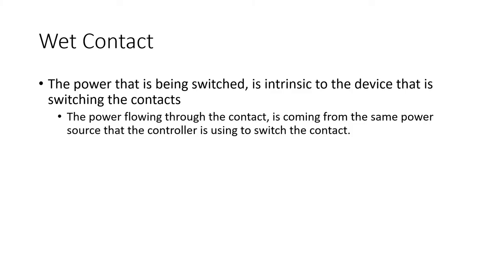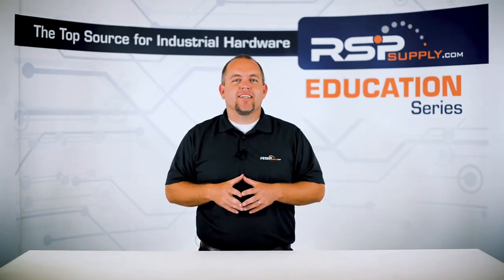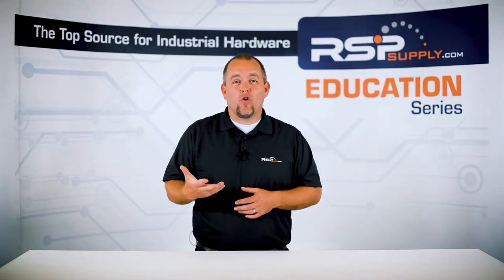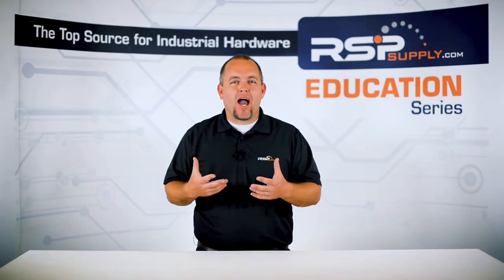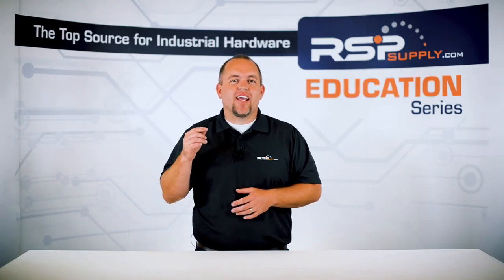Now let's talk about a wet contact. Wet contacts are different in one main area: the power that is being switched is intrinsic to the device that is switching the contacts. In other words, the power flowing through the contacts is coming from the same power source that the controller is using to switch the contact. For example, a common device we are all familiar with is a furnace in our homes. This furnace is most likely being supplied 120 volts or 240 volts AC power from our home's electrical panel.